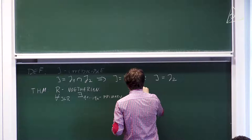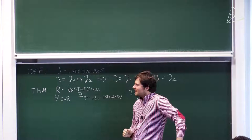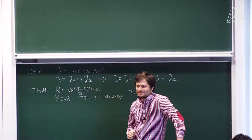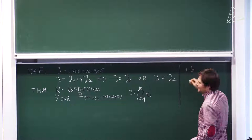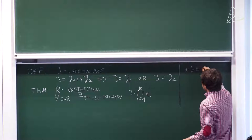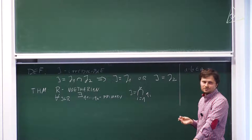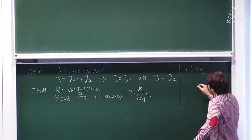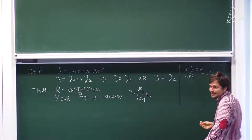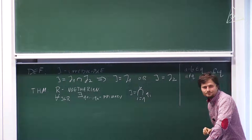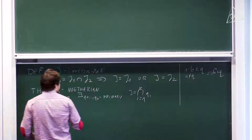Let me recall the definition of a primary ideal, which is slightly weaker than prime. For a prime ideal: if a product ab is in the ideal, then a or b is in the ideal. For a primary ideal Q: if ab ∈ Q and a ∉ Q, we don't conclude b ∈ Q, but we do conclude b is in the radical of Q — meaning b^n ∈ Q for some n. It's a larger class.